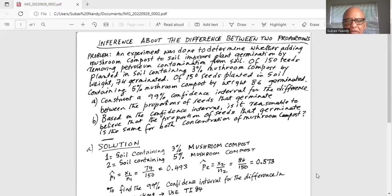Based on the confidence interval, is it reasonable to believe that the proportion of seeds that germinate is the same for both concentrations of mushroom compost?